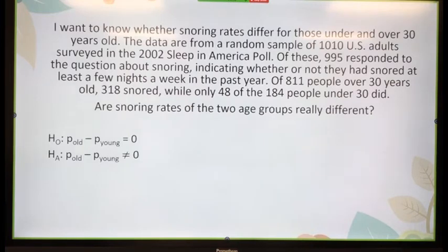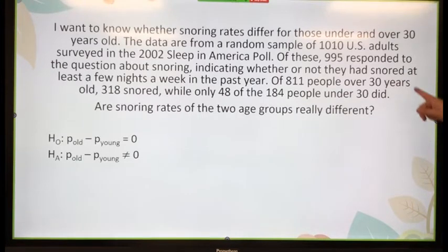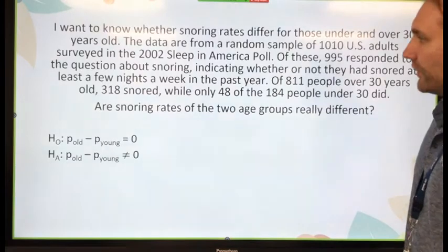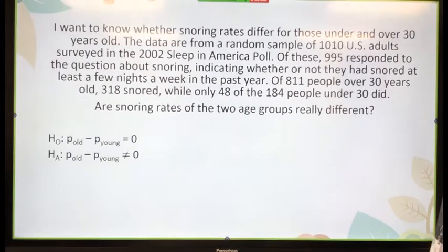The data are from a random sample of 1,010 U.S. adults surveyed in the 2002 Sleep in America poll. Of these, 995 responded to the question about snoring, indicating whether or not they had snored at least a few nights a week in the past year. Of 811 people over 30 years old, 318 snored, while only 48 of the 840 people under 30 did. Are snoring rates of the two age groups really different?